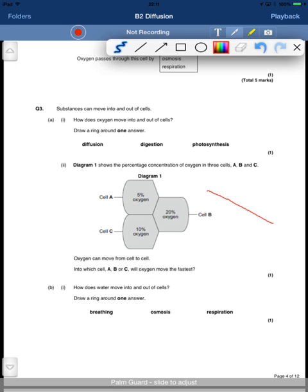Into which cell A, B, or C will oxygen move the fastest? Now in this scenario, whenever we have a gradient, the question would be if this was say a car moving down a hill, which would the car move fastest down? Would it move down this one with this slope here or this one with this really steep slope?